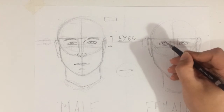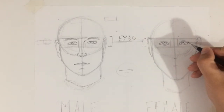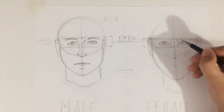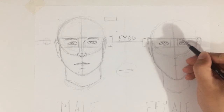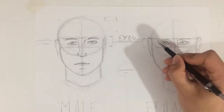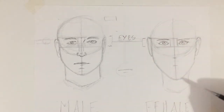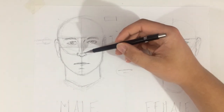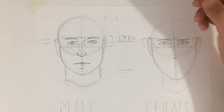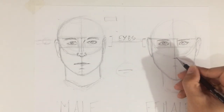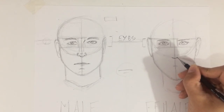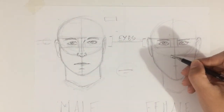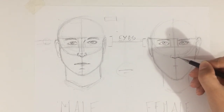I might even draw some lines up here. For the eyebrows, they tend to be thinner for females, so I'll draw something like this. For the nose — I pointed out that when I drew males I like to make the nose a bit sturdier, so for the female I will make it a bit rounder. It is pretty much the same construction, but with that design I would make it somewhat rounder.